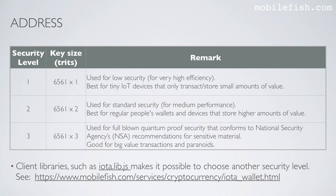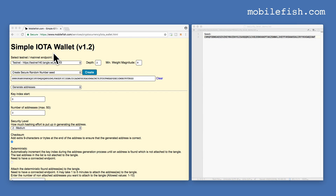Client libraries such as iota.lib.js make it possible to choose another security level. This is my simple IOTA wallet, created for educational purposes. Do not use this wallet in production, otherwise you will lose all your IOTAs. In this demo I will show you the different addresses generated when you change the security level.